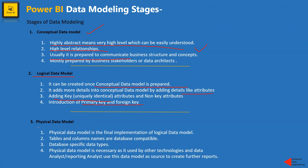The physical data model is the final data model in the three stages of data modeling. It is the final implementation of the logical data model. Tables and column names are database compatible — we name database tables and columns as per the actual data source so they can be related to each other. We follow database-specific data types. Physical data model is necessary as it is used by other technologies, and data analysts or reporting analysts use this data model.